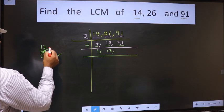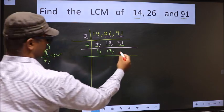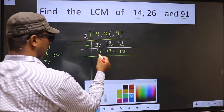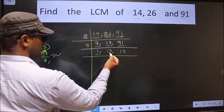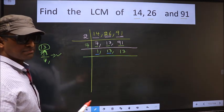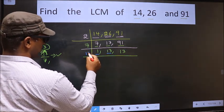And here we write this number that is 13. We got 1 here. So focus on the next number that is 13. 13 is a prime number. So 13 times 1 is 13.